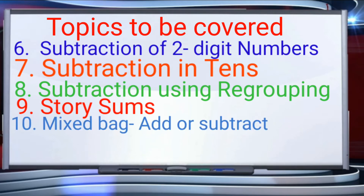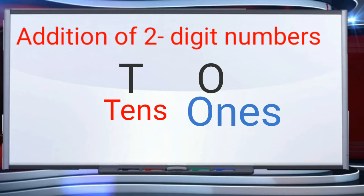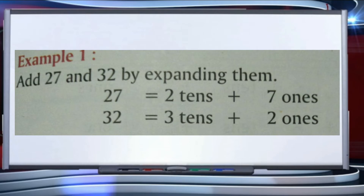We will also cover addition or subtraction facts. We will start with addition of two-digit numbers. In two-digit numbers we know we have tens and ones, so when we do addition we will do it by expanding the numbers. First example: add 27 and 32 by expanding them.